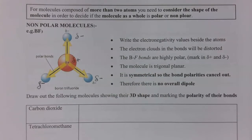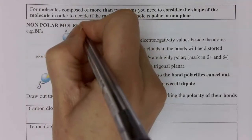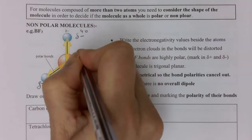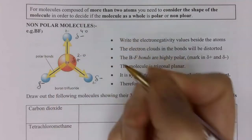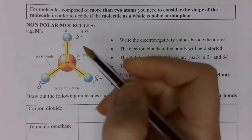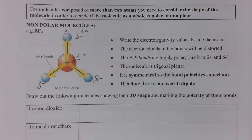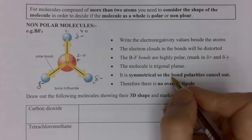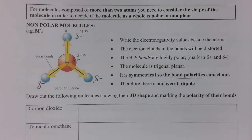They are very polar because you have electronegativities of 4.0 for the fluorines and 2.0 for boron. So there's a big electronegativity difference between these two and these bonds are highly polar. But because the molecule is trigonal planar it is symmetrical, therefore the electron cloud is symmetrical and these bond polarities will cancel out.